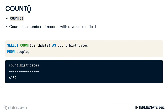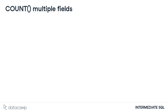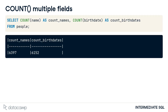We've used the alias count_birthdates for the field name in this example to make the results more readable. If we want to count more than one field, we need to use COUNT multiple times. Here we are counting both the number of names and birthdates present in the people table.